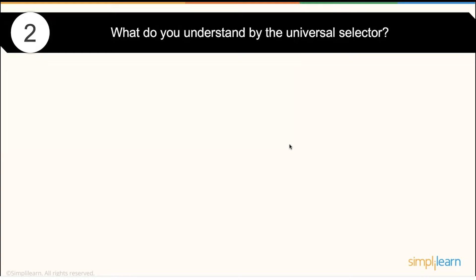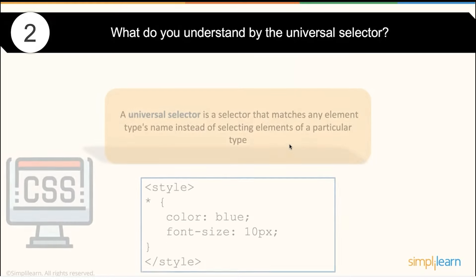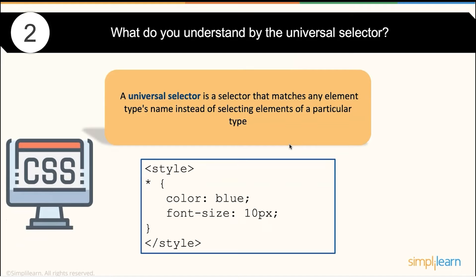What do you understand by the universal selector? In CSS, we normally talk about specific selectors like class selectors and ID selectors, which select a specific set of elements. When we talk about the universal selector, it matches any element type — instead of selecting elements of a particular type, it uses an asterisk (*) so all elements, irrespective of their name or category, will be selected.